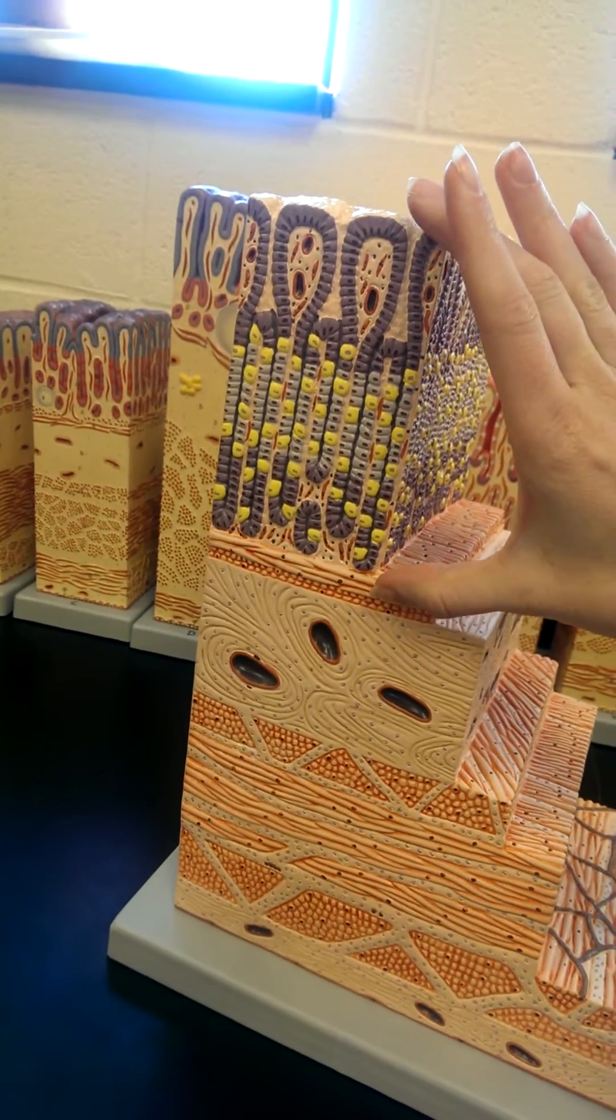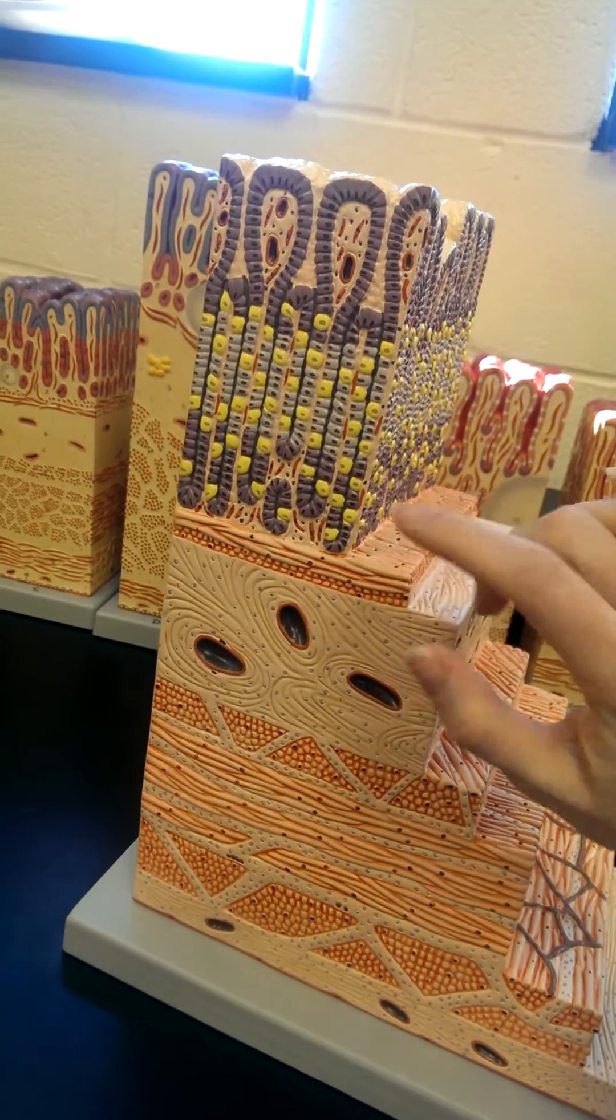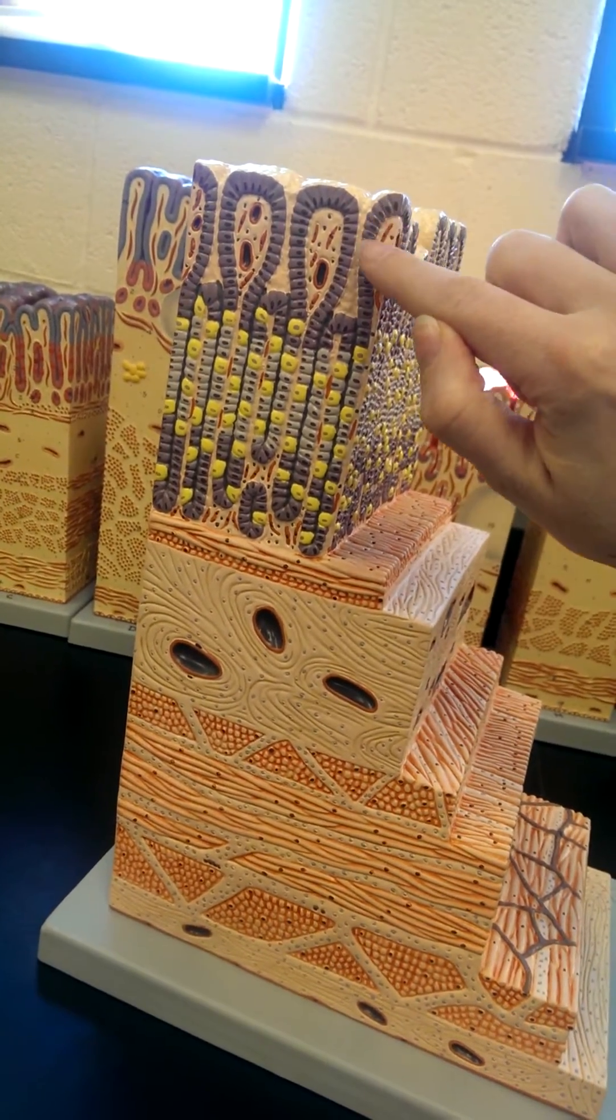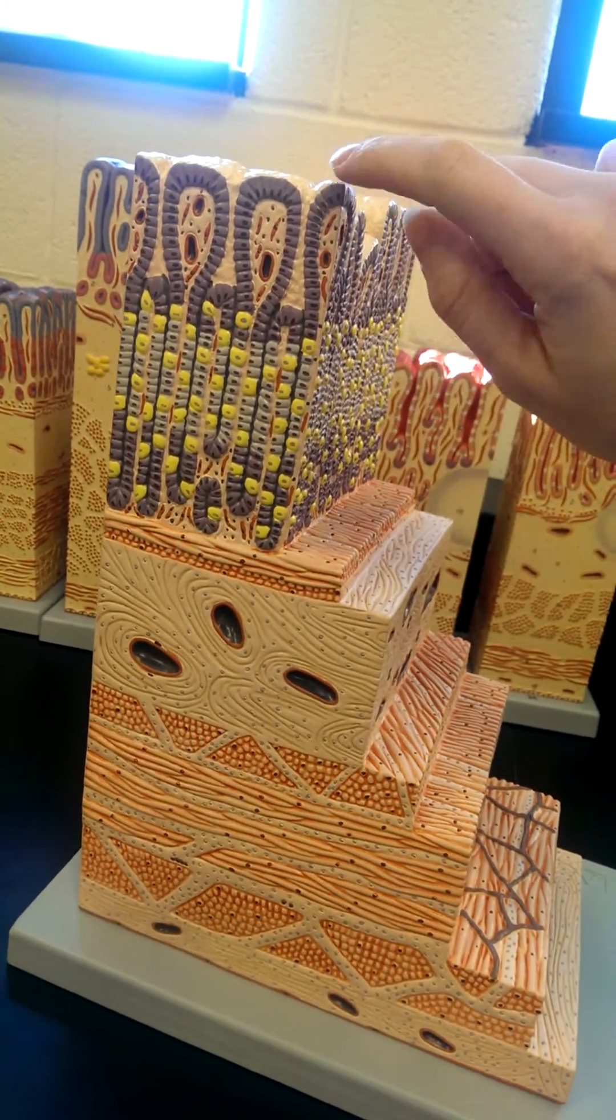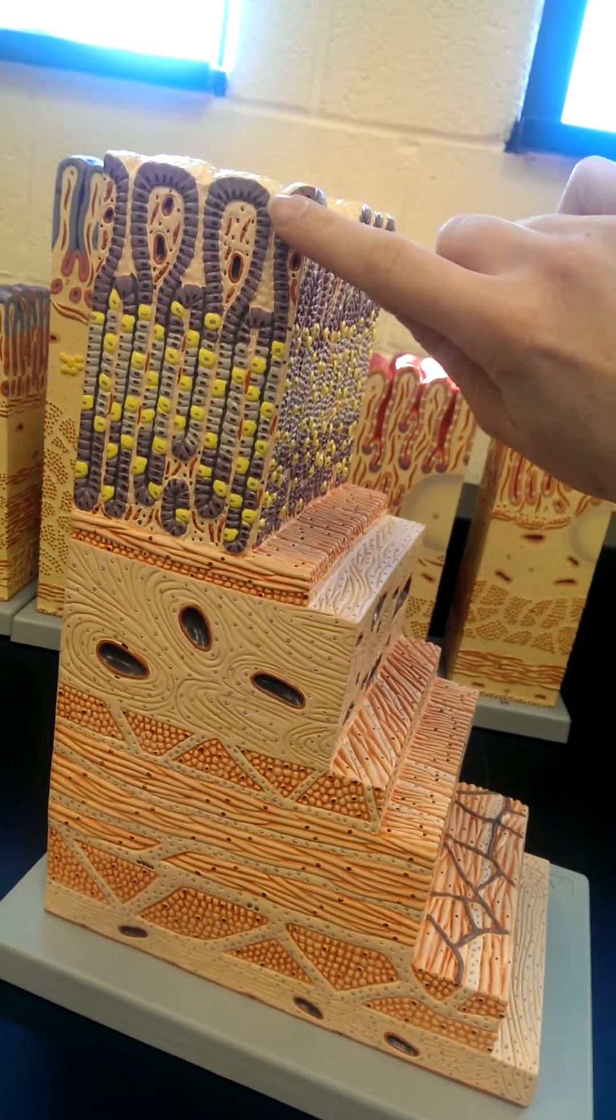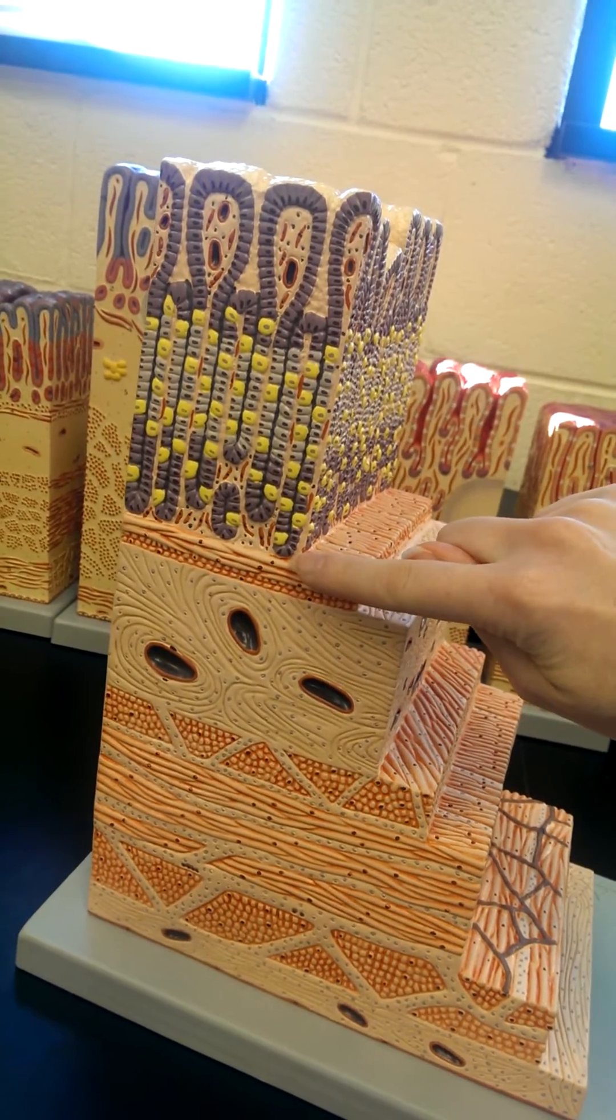So our three layers are going to be mucosa. We see a nice simple cuboidal epithelium making up these gastric glands. The openings to the gastric glands are gastric pits. We see some smooth muscle associated with that layer.